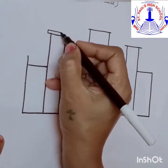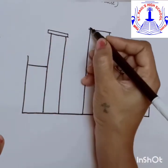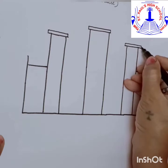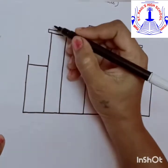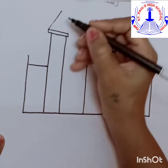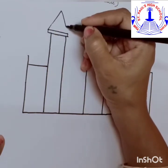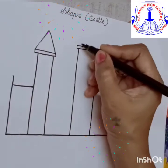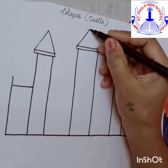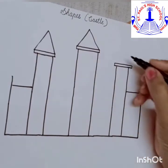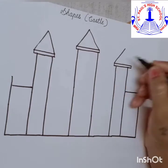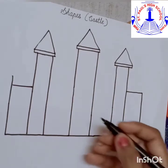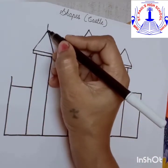Children, now as we are done with the rectangle shape, let us move to another shape — and that is triangle. We are going to make the top roof of the castle. Isn't it so easy to draw a castle? Let us draw the flag.